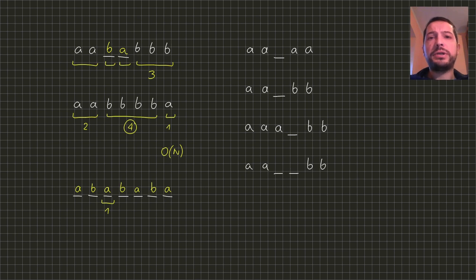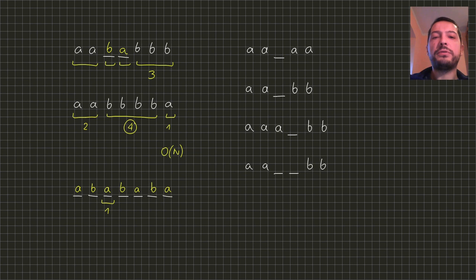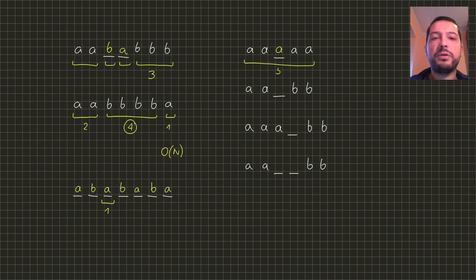So let's move to the general case. What if we have a mixture of fixed and missing letters? Then we can get different answers depending on the letters we choose to put in the gaps, because the new letters can extend the fragments of fixed letters, increasing their length, and we would like to avoid it if possible. For instance, putting A in the gap of the first word will merge two fragments of A into a big fragment of length 5.